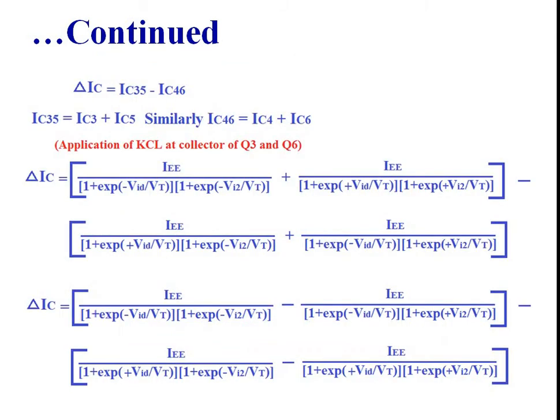Delta IC is given as IC35 minus IC46, where IC35 is equal to IC3 plus IC5, and IC46 is equal to IC4 plus IC6. Substituting the values of IC3, IC4, IC5, and IC6, we can derive the expression for delta IC.